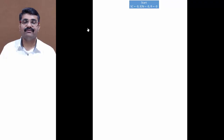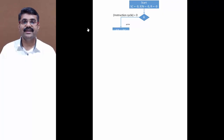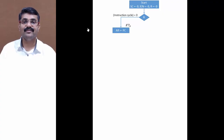We start with the sequence counter set to 0, interrupt enable set to 0, and the R flip-flop. This R flip-flop decides whether it is the instruction cycle or the interrupt cycle. Initially R is set to 0. If R is 0, it is our normal instruction cycle.